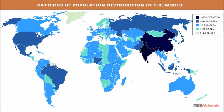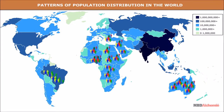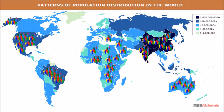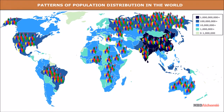Population distribution patterns and density help us to understand the demographic characteristics of any area. The term population distribution refers to the way people are spread over the earth's surface.